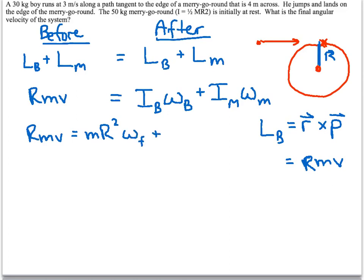That'll be our omega final, which is what we're looking for. Plus the I of the merry-go-round, which for a uniform disc is 1/2 mr squared times the omega final. So one of these r's cancels out.